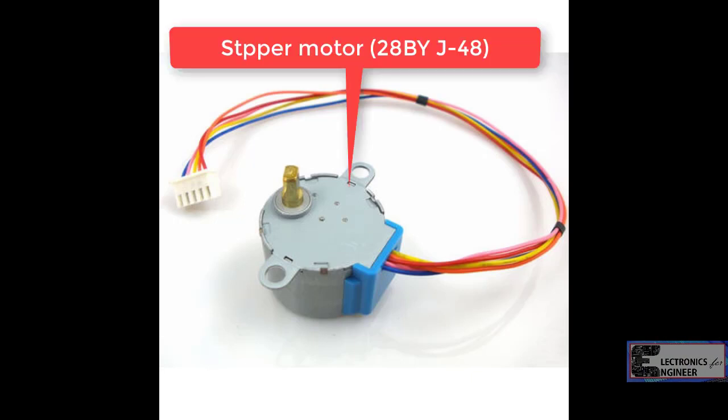If you see here, unlike a normal DC motor, this 28BYJ-48 stepper motor has 5 wires of all fancy colors coming out of it. And why is it so? To understand this, we should first know how a stepper motor works.